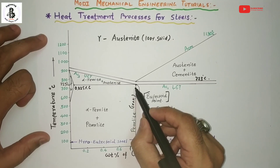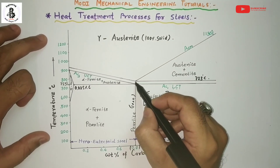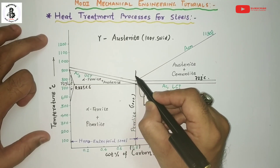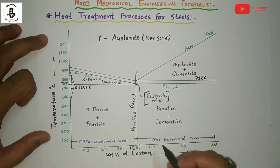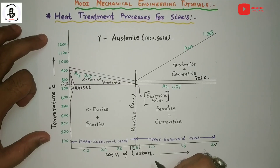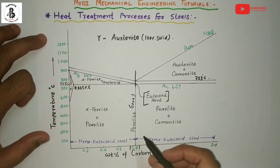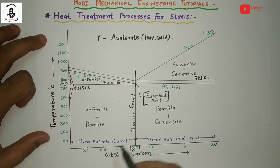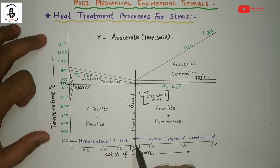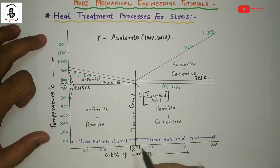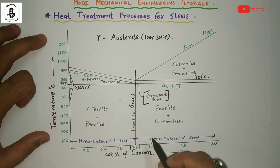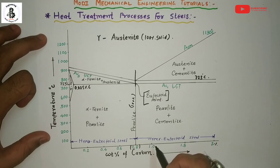The transformation passes through this line — that will be the eutectoid steel formation. Now if you want to increase the properties of normal steels — whether hypo-eutectoid, eutectoid, or hyper-eutectoid steel — you will perform different heat treatment processes, and then you will enhance the mechanical properties of the steels.